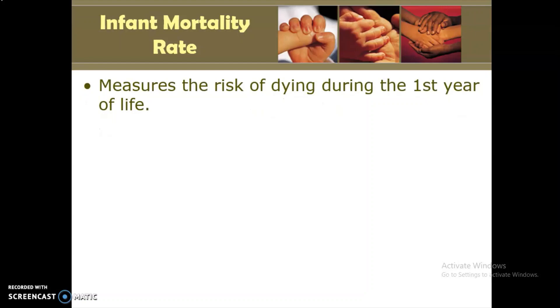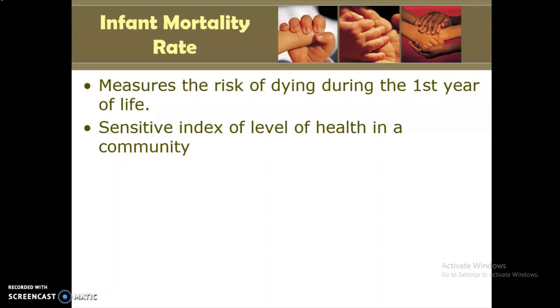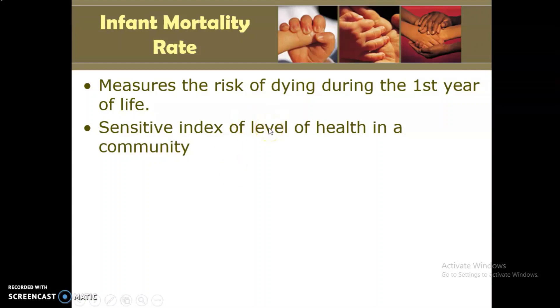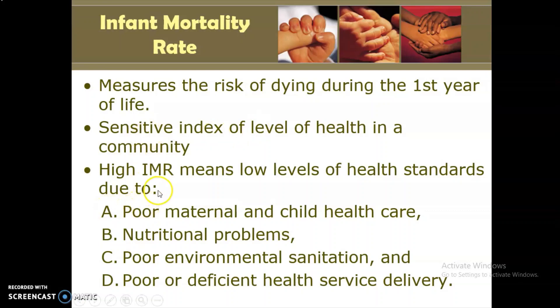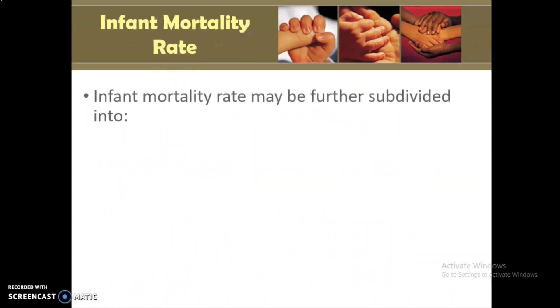The infant mortality rate measures the risk of dying during the first year of life and is the most sensitive index of the level of health in the community. A higher IMR means lower levels of health standards, due to reasons including poor maternal and child health care — which is why MDG 4 and 5 focused on this — nutritional problems, poor environmental sanitation, and poor or deficient health service delivery.